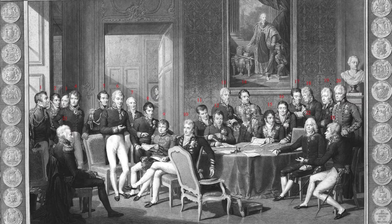Britain was represented first by its Foreign Secretary Viscount Castlereagh, then by the Duke of Wellington after Castlereagh's return to England in February 1815. In the last weeks it was headed by the Earl of Clancarty, after Wellington left to face Napoleon during the Hundred Days. Tsar Alexander I controlled the Russian delegation, which was formally led by Foreign Minister Count Carl Robert Nesselrode. The Tsar had two main goals: to gain control of Poland and to promote the peaceful coexistence of European nations.